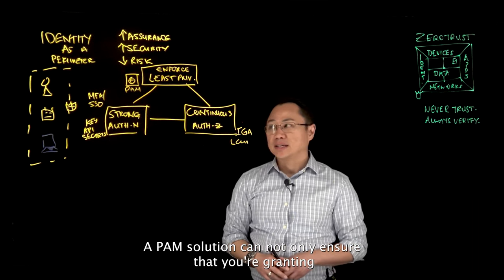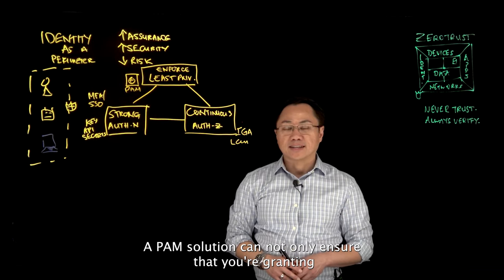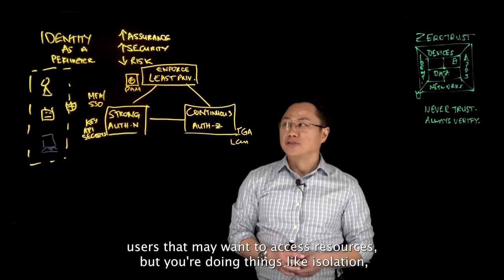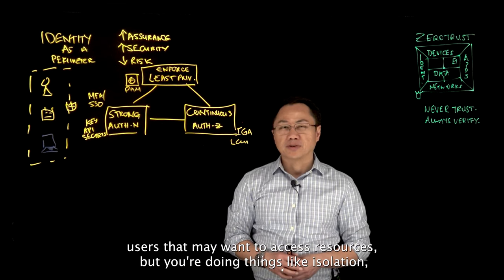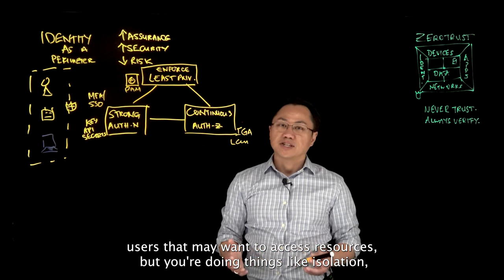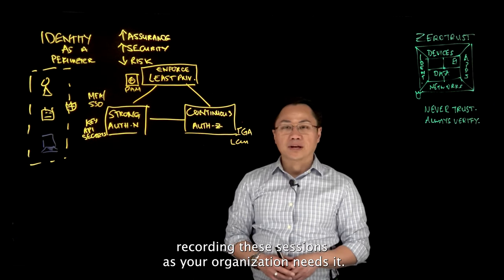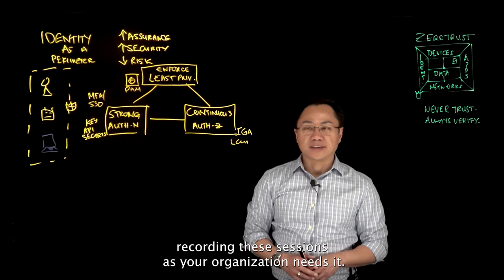A PAM solution can not only ensure that you're granting just the right privileges to those high privileged users that may want to access resources, but you're doing things like isolation, you're doing session monitoring, you're auditing, and you're recording these sessions as your organization needs it.